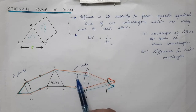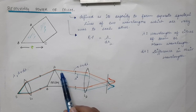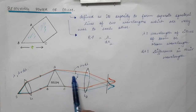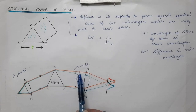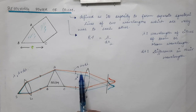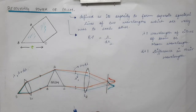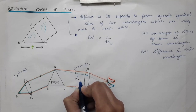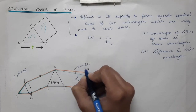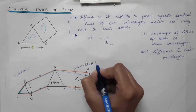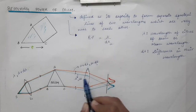The orange ray with wavelength lambda plus d_lambda is bent less compared to the blue ray with wavelength lambda, meaning the refractive index for the blue ray is greater than for the orange ray. For the lambda wavelength, the refractive index is mu, and for lambda plus d_lambda, the refractive index will be mu minus d_mu.